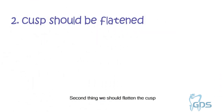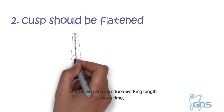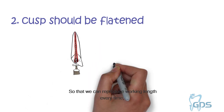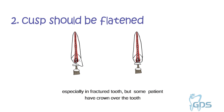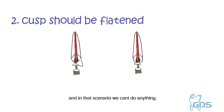The second thing is we should flatten the curve so that we can reproduce the working length every time, especially in fractured teeth. But some patients have a crown over the tooth, and in that scenario we cannot do anything.